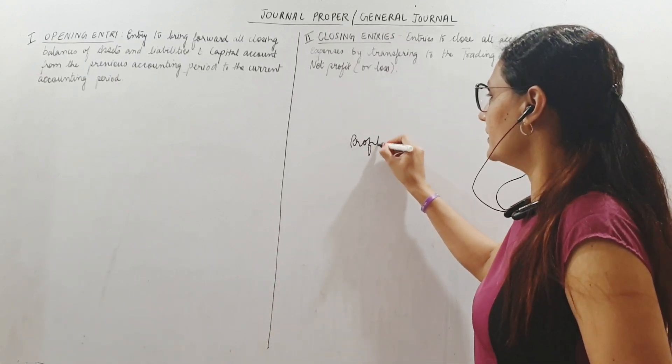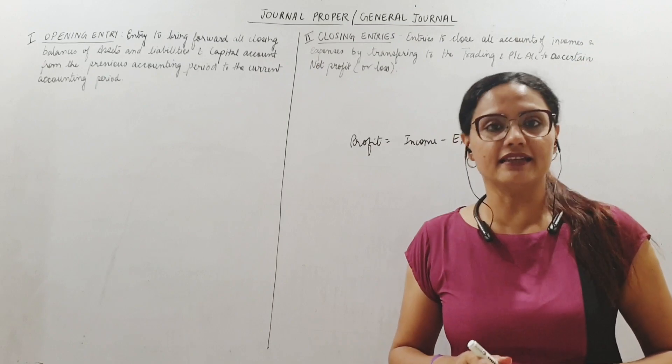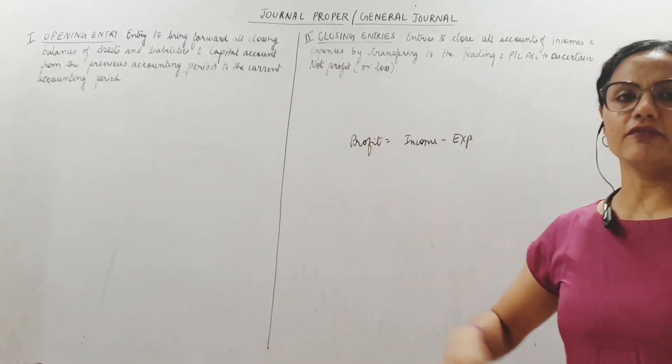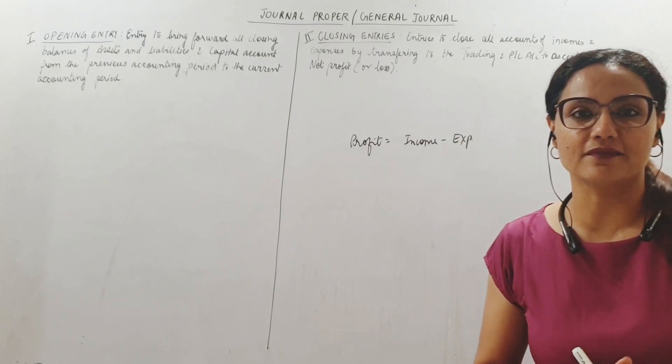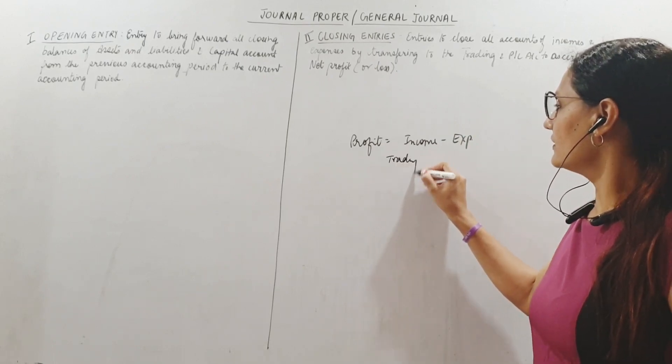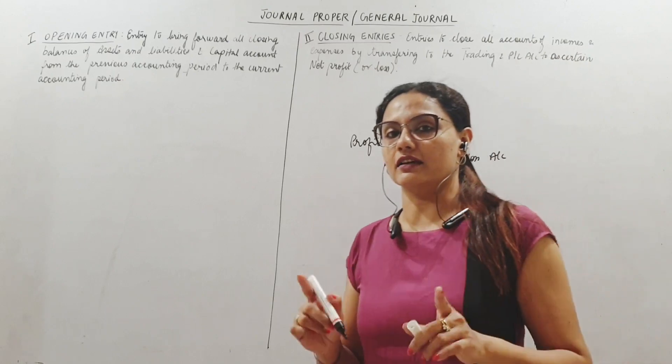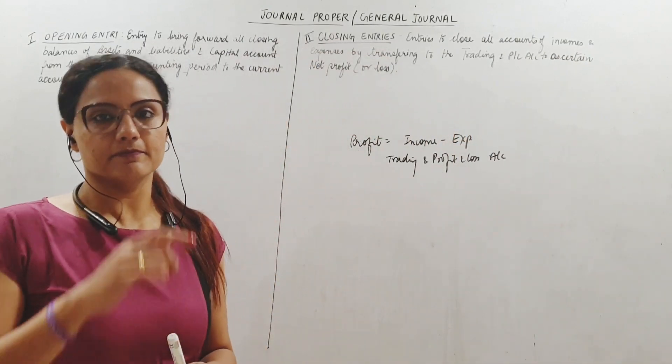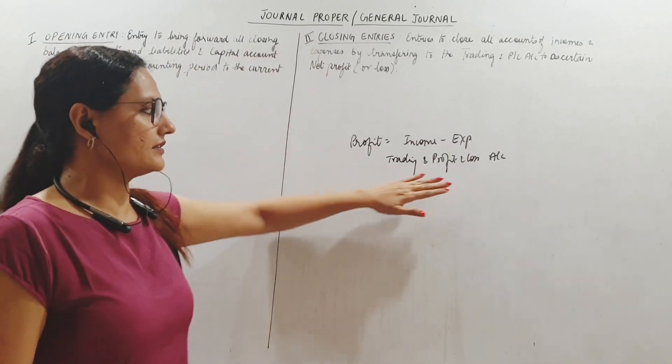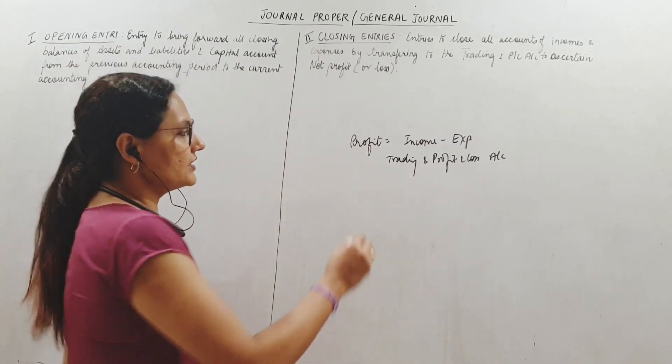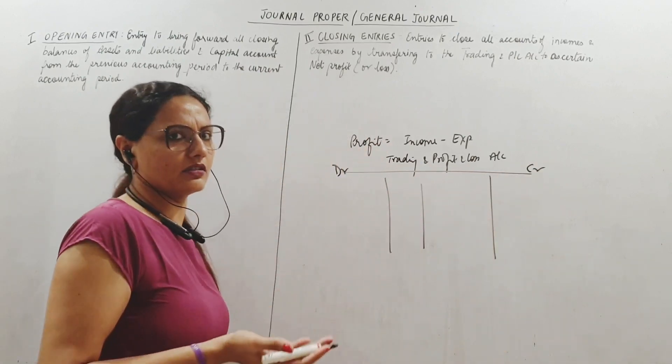To find out profit or loss at the end of the year, my profits or losses depend on what? My incomes and expenses. So to find out profit we need to subtract all our expenses from all our incomes. If income is more than expense then we have a profit, and if it is otherwise we will have a loss.